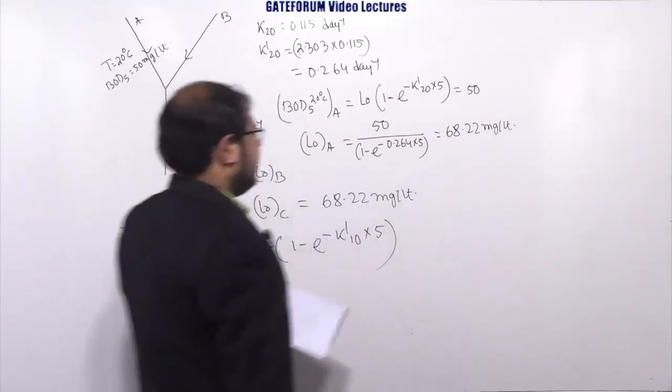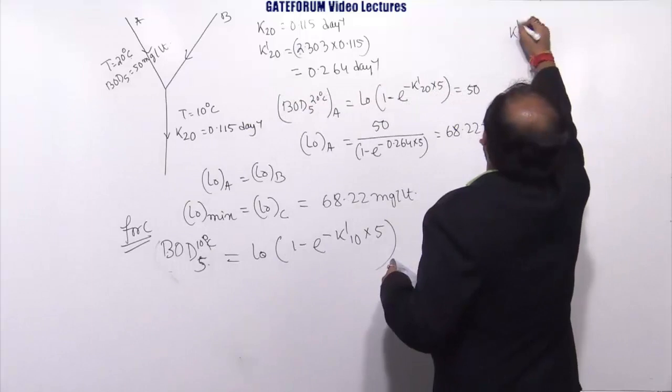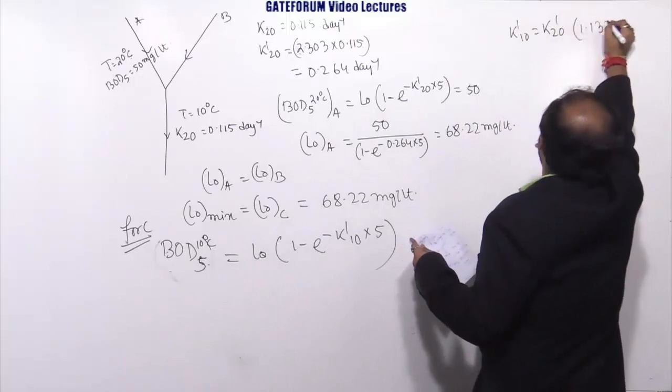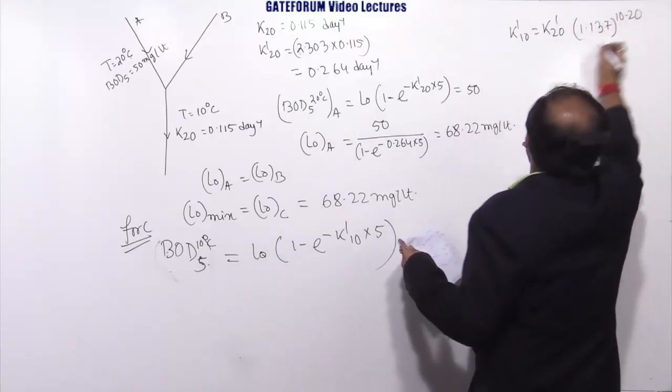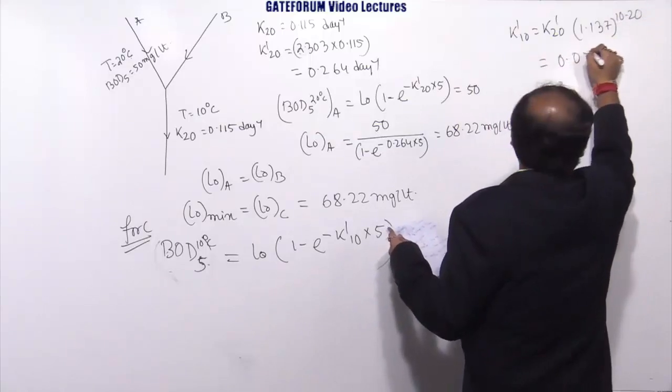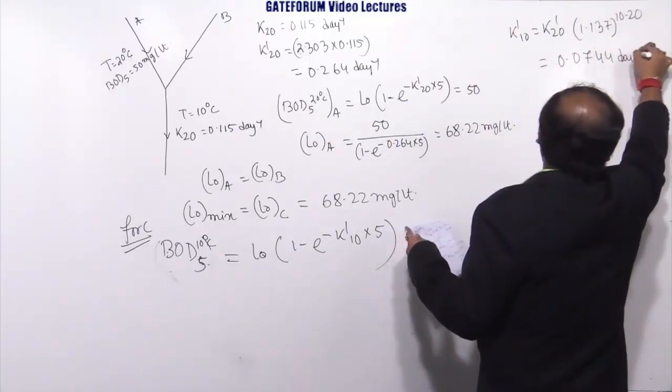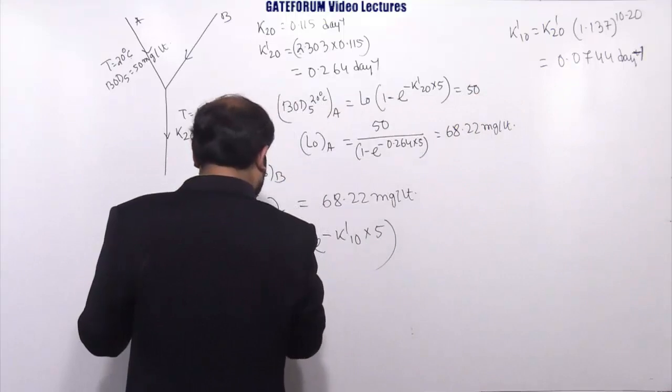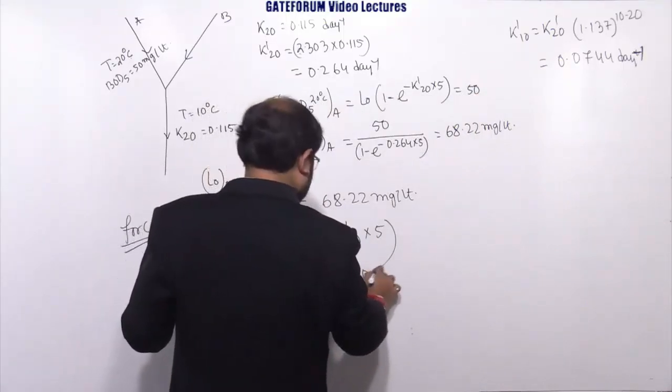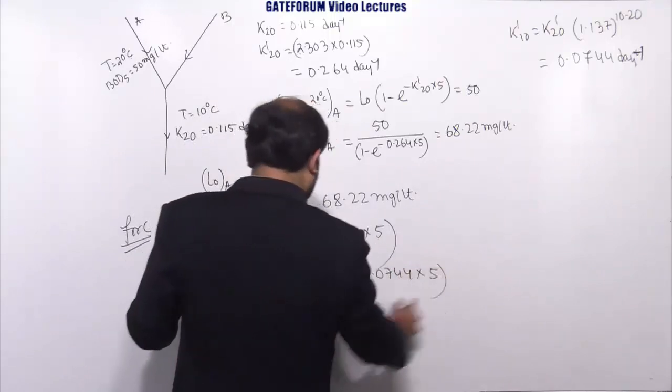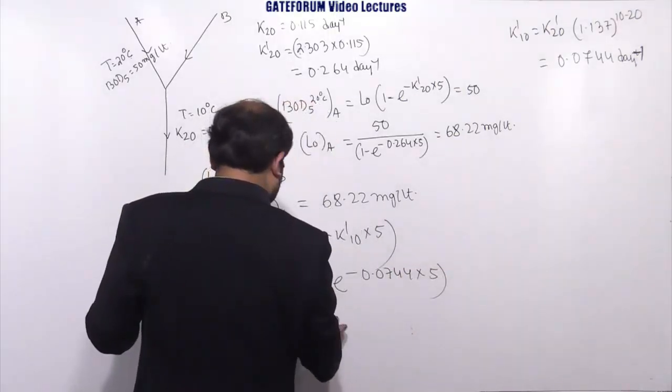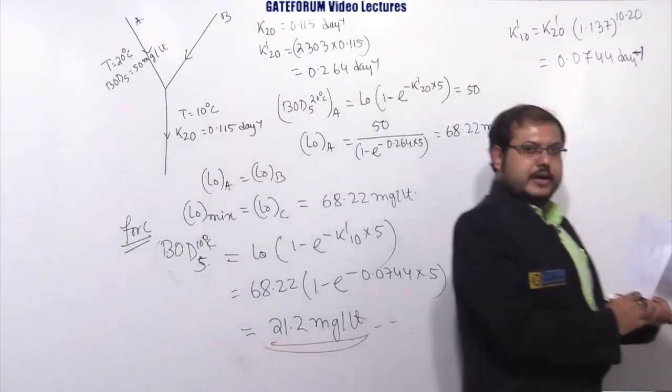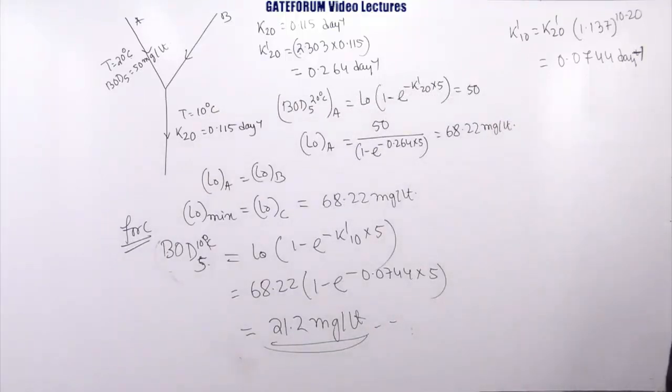Now we need to find out this K'10. K'10 equals K'20 into temperature constant given as 1.135^(10-20), that equals 0.0744 day inverse. So if you put this, 68.22 into (1 - e^(-0.0744 × 5)), final answer will be 21.2 mg/L will be your final answer.